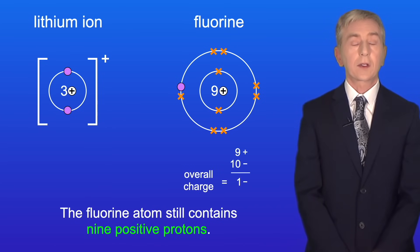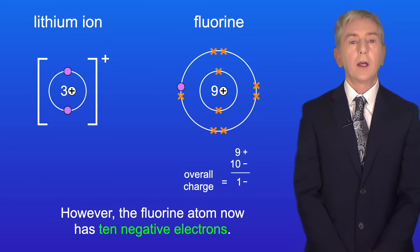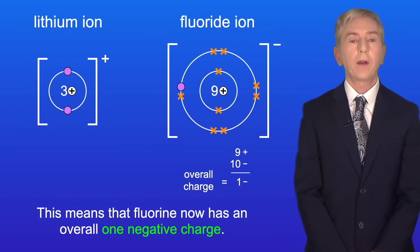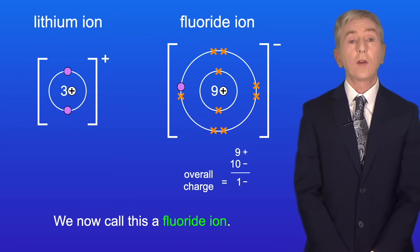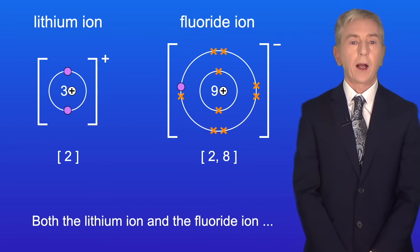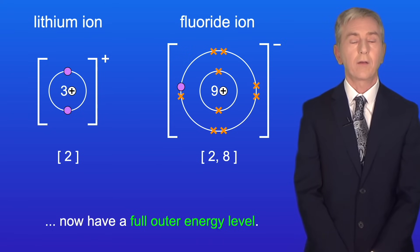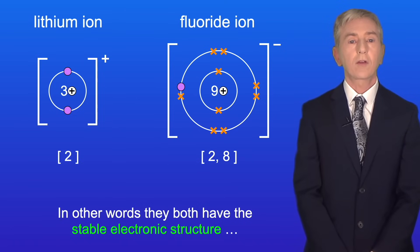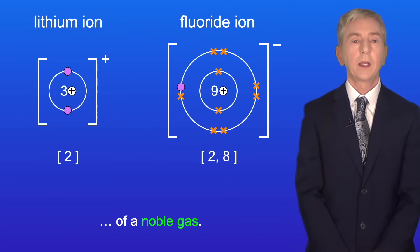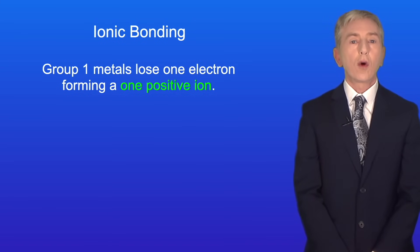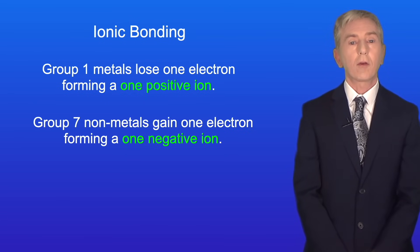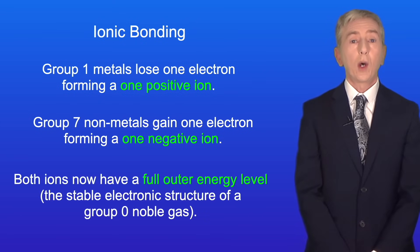The fluorine atom still contains nine positive protons, but now has ten negative electrons, giving it an overall one negative charge. We now call this a fluoride ion. Both the lithium ion and the fluoride ion now have a full outer energy level — the stable electronic structure of a noble gas. So remember: during ionic bonding, group 1 metals lose one electron forming a 1+ ion, and group 7 non-metals gain one electron forming a 1− ion. Both ions now have the stable electronic structure of a group 0 noble gas.